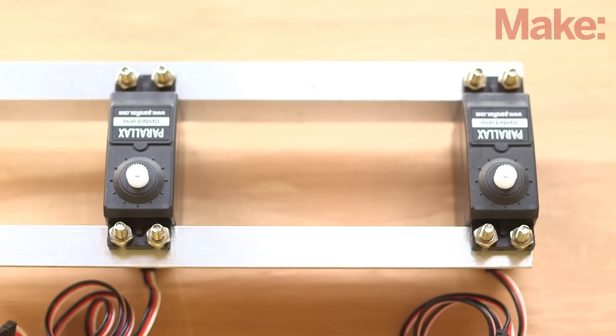To make the shoulder joint, repeat the process and mount the second servo so that their rotational centers are four inches apart.